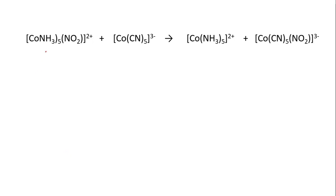Take a look at this example. Here we have a nitro complex where the cobalt is connected to the nitro group through nitrogen. And here you have a cyanido complex. What's happening here is the oxidation state of the cobalt in the cyanido complex is +2.